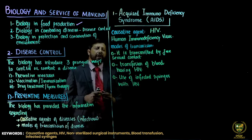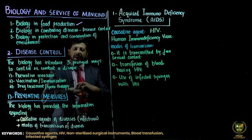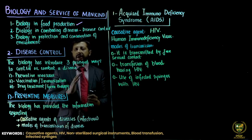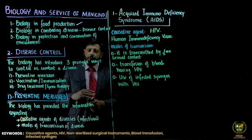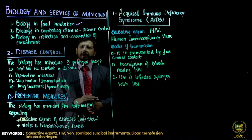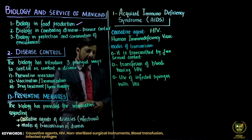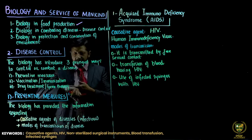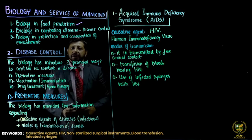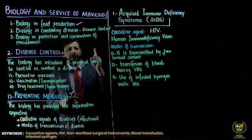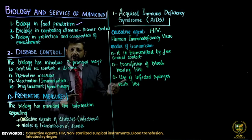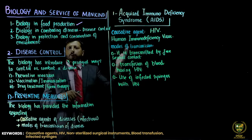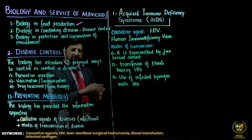If a person has HIV and a syringe was used on them and that same syringe is used on someone else, it will spread. In Pakistan and neighboring countries where socio-economic conditions are not well developed, quack doctors in peripheral areas use one syringe on many patients. If even one patient has HIV, all those injected with the same syringe will be infected.